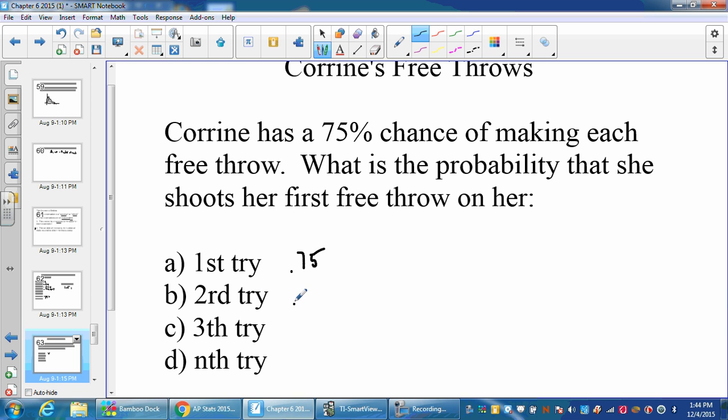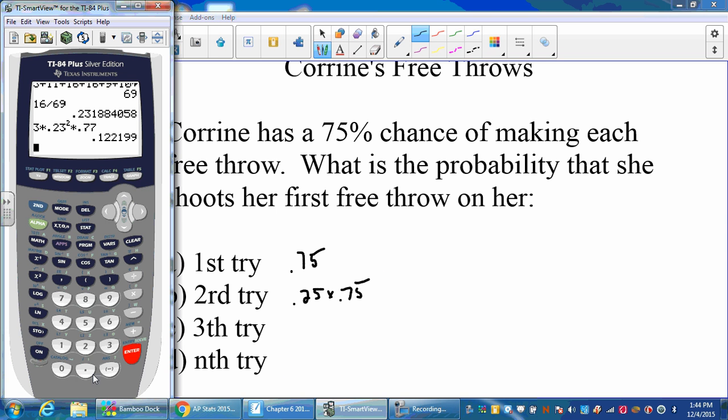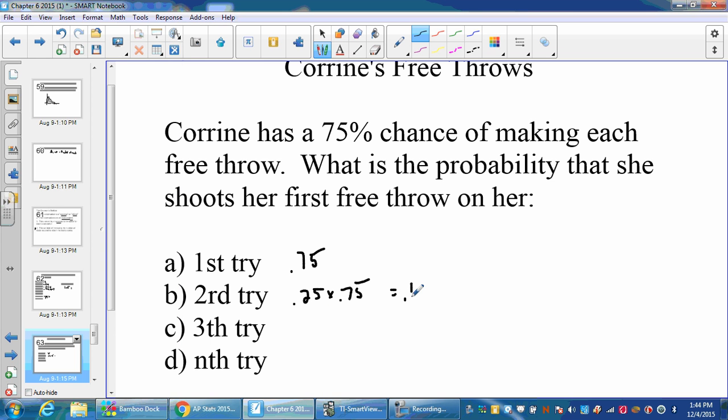If she makes it on the second try, that's 0.25 times 0.75, which we could figure out is 0.1875.